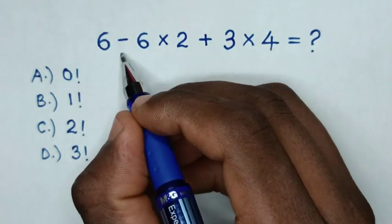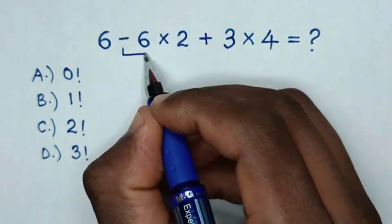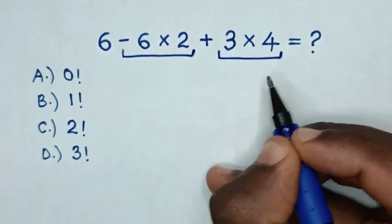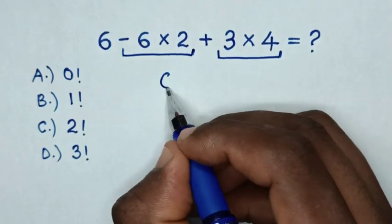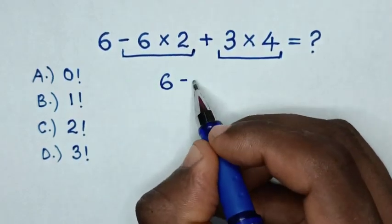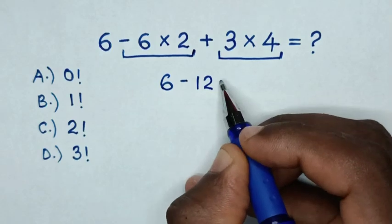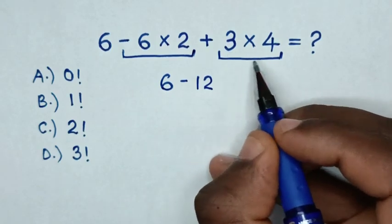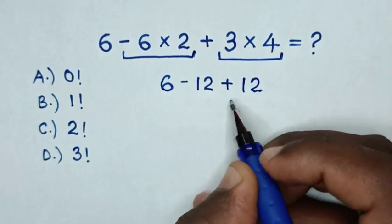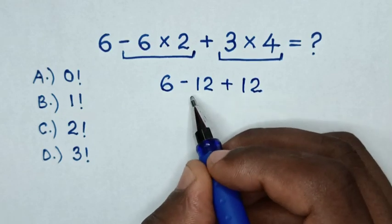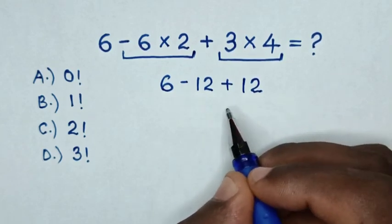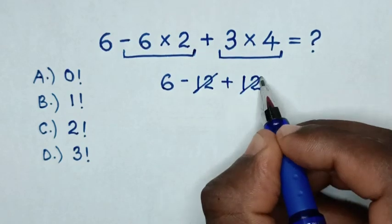So first, we'll deal with this multiplication and this multiplication. So here it will be 6, then negative 6 times 2 is negative 12, then 3 times 4 is positive 12. Then we'll deal with addition, so negative 12 plus 12 is 0, so they will cancel each other.